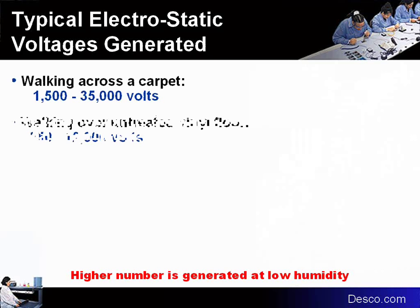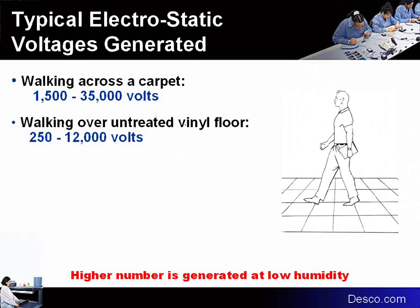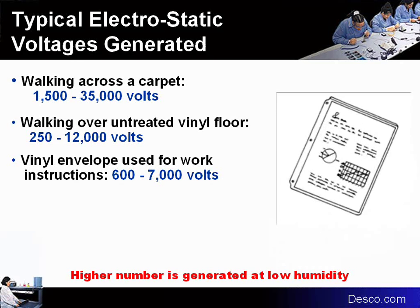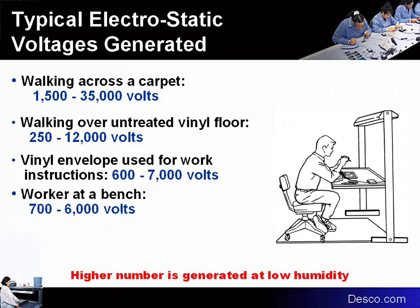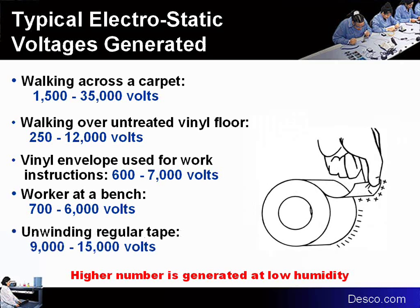Some typical examples: walking across a carpet, you can get up to 35,000 volts. Walking over untreated vinyl floor, up to 12,000 volts. Vinyl envelopes or plastics at the workbench with instruction sheets, up to 7,000 volts. An operator just moving around on a chair at a bench can generate as high as 6,000 volts. Unwinding regular tape at a workstation can generate up to 15,000 volts.